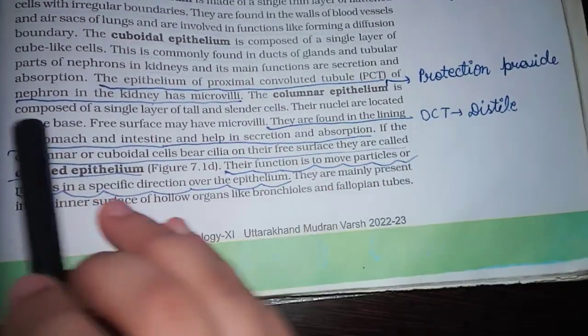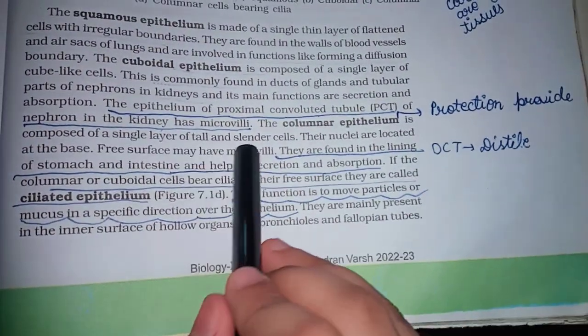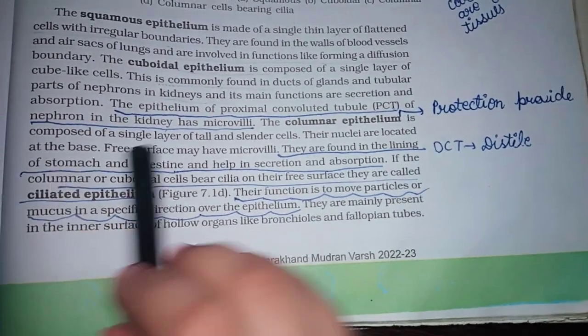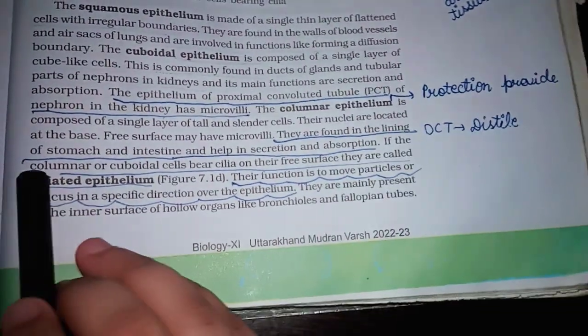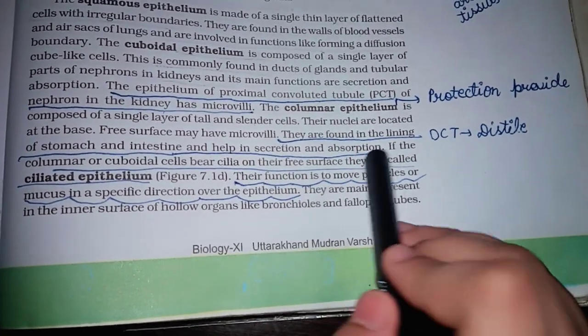The columnar epithelium is composed of a single layer of tall and slender cells. Their nuclei are located at the base. Free surface may have microvilli. They are found in the lining of stomach and the intestine and it helps in secretion and absorption.